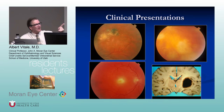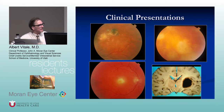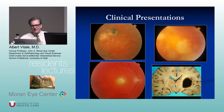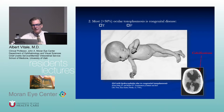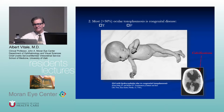Toxoplasma quiz: Most toxoplasmosis is congenital disease — true or false? False. Recent epidemiologic studies suggest the majority is acquired. Much of it is acquired postnatally.